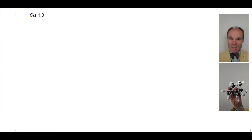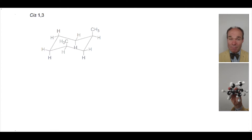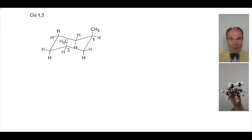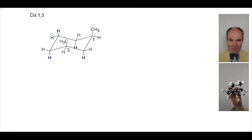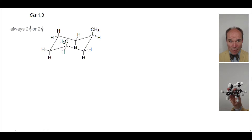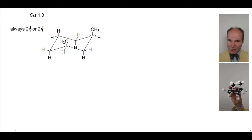CIS-1,3-disubstitution patterns tell us that the methyl groups are attached to carbons 1 and 3 of the cyclohexane, while CIS informs us that the methyl groups are on the same side of the ring. So if you draw a horizontal dotted line through the ring carbon, both of the methyl groups are above (up from the line) or below (down from the line).